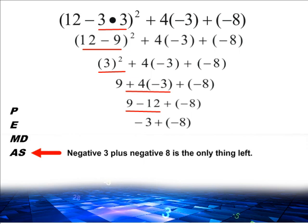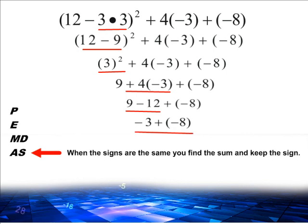And at the end, we have two integers with the same sign. When the sign is the same, we always find the sum and keep that sign.